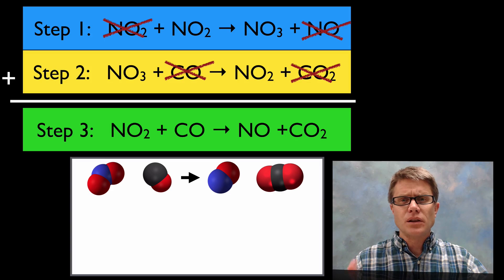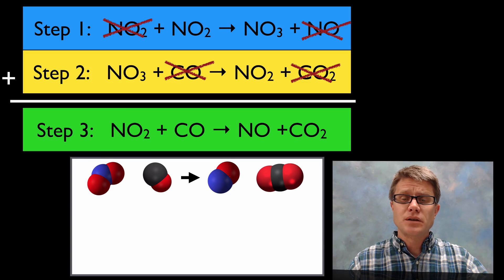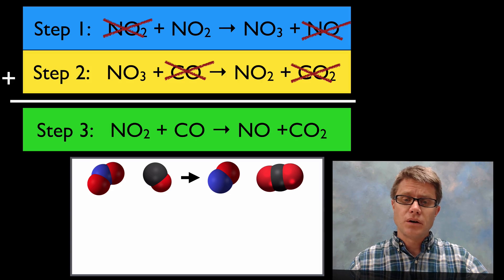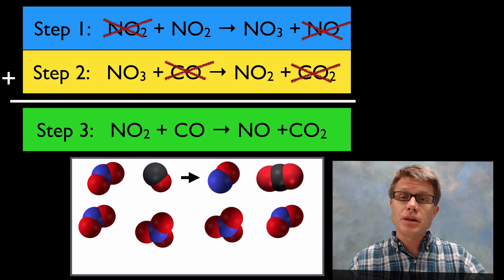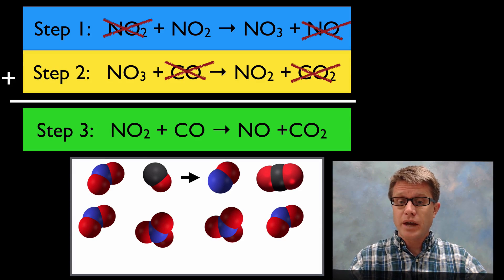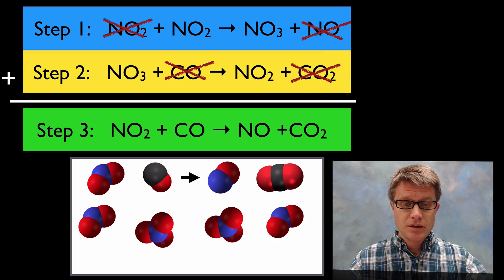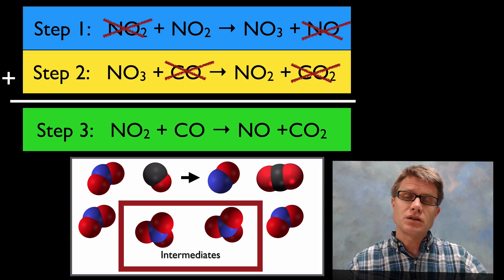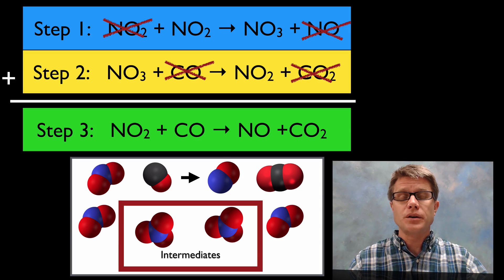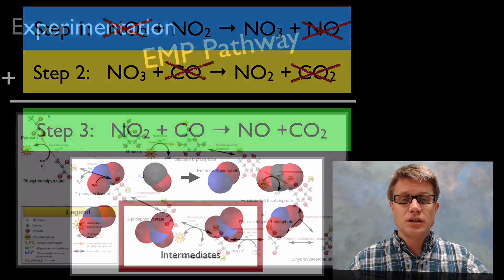And so what we find is there's a lot of stuff in those elementary steps that don't necessarily show up in that overall reaction. So if we were to write those, we find that some of those are in our initial reaction. So an example could be this nitrogen dioxide that's going to be right here. But we're also finding these things that just show up for a little bit and then disappear. We call those reaction intermediates.